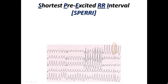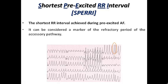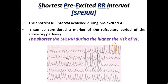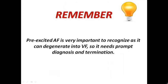We also have a parameter called the shortest pre-excited RR interval, sometimes abbreviated as SPERRI. This is the shortest RR interval achieved during pre-excited AF, measured in milliseconds. It is considered a marker of the refractory period of the accessory pathway: the shorter this index, the higher the risk of ventricular fibrillation. When the pre-excited RR interval is very short, the risk of R-on-T phenomenon is high, increasing the risk of VF. So accessory pathways are sometimes assessed using this index.